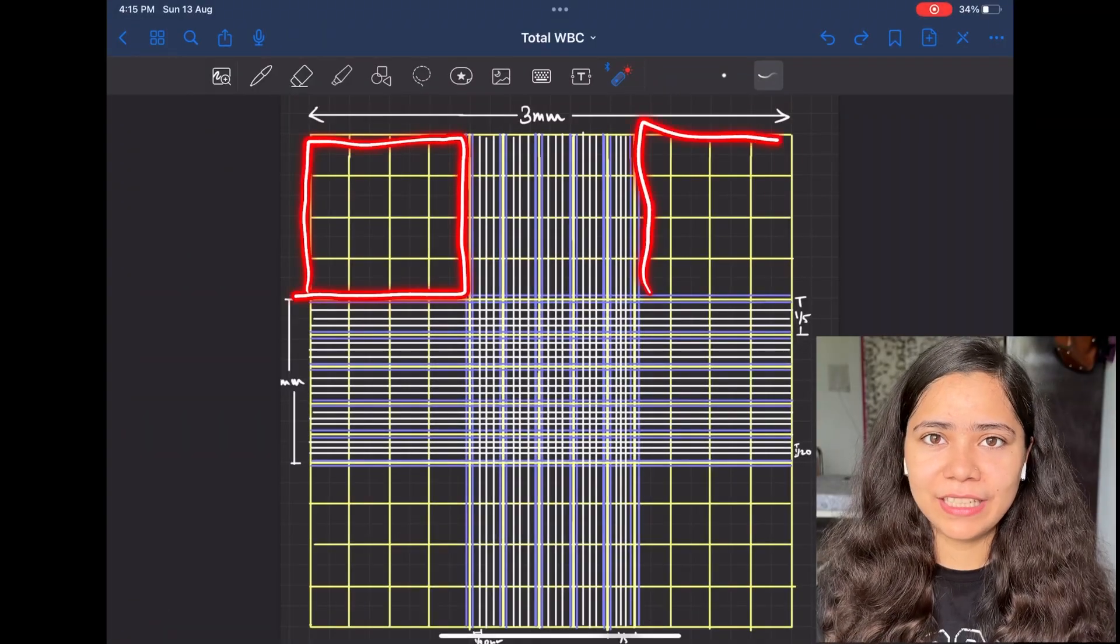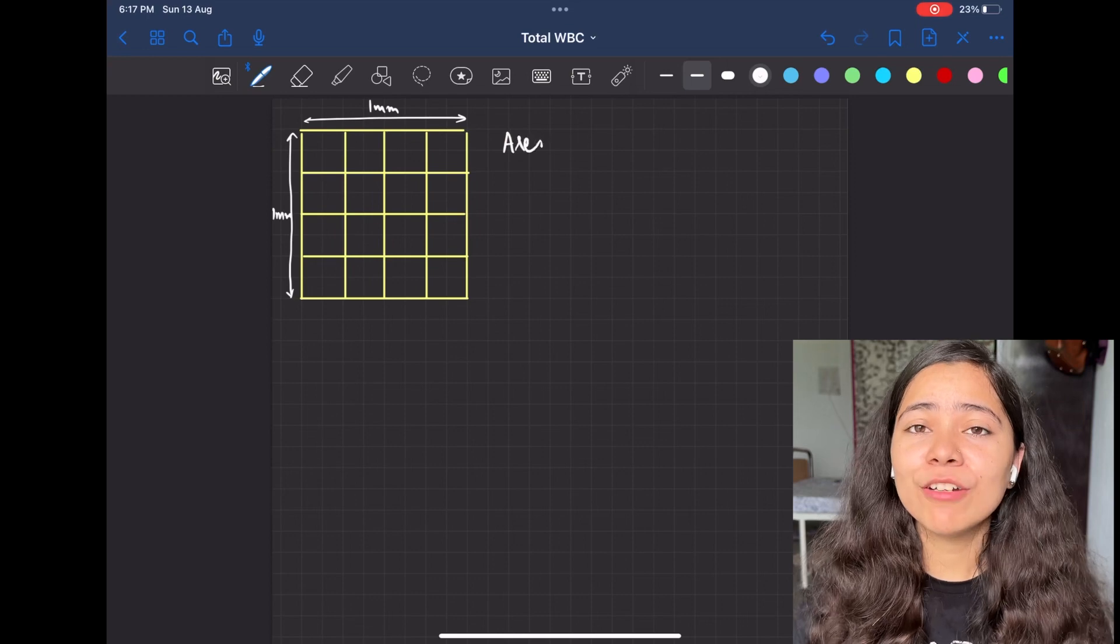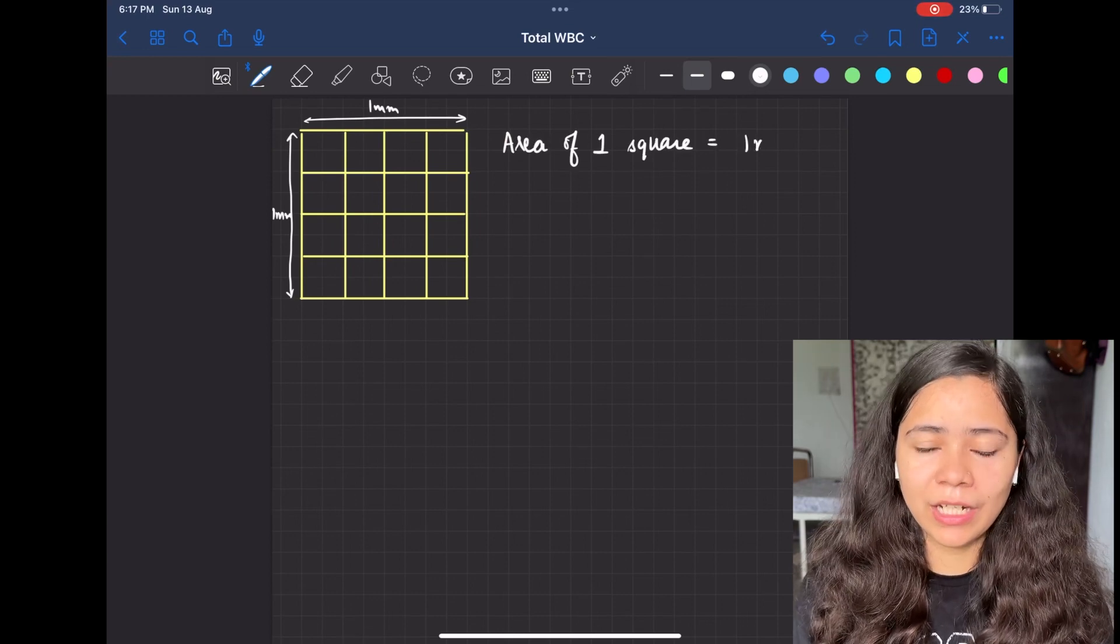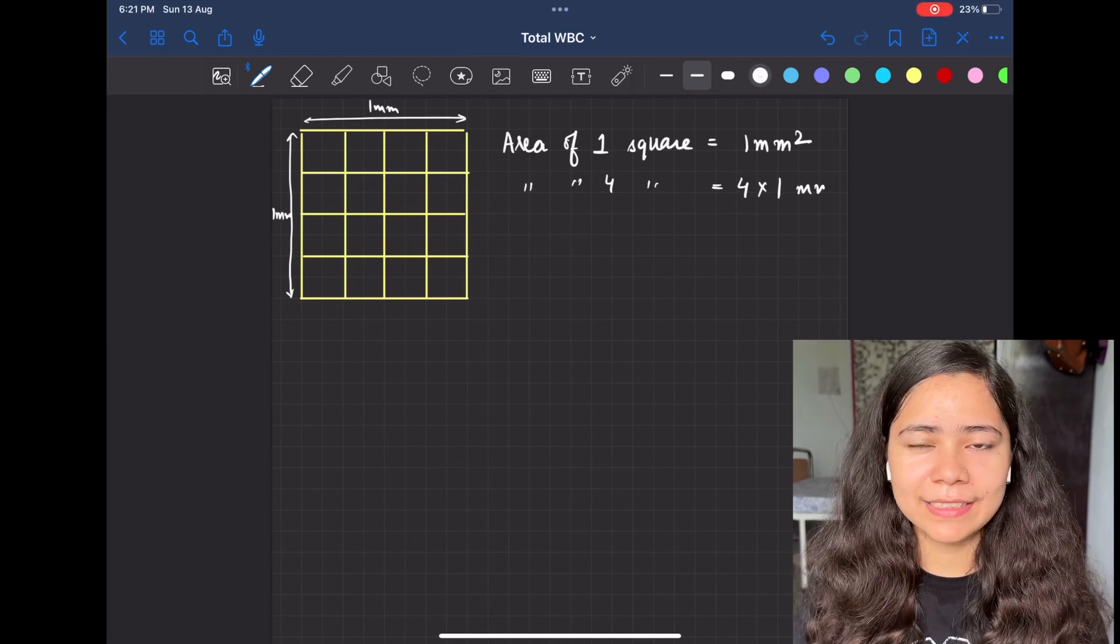Let's start with total leukocyte count. The four squares in the corners are used for total leukocyte count. The area of one square is 1 mm². As there are four such squares, the area of all four squares is 4 × 1 mm² = 4 mm².